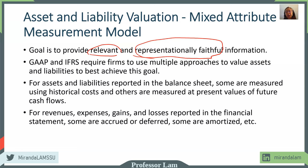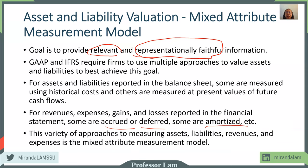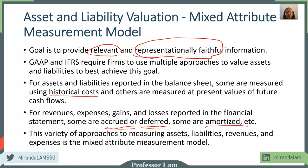So the approaches include cash basis, accrual or deferral — that's the matching principle — as well as amortization. To summarize: for assets and liabilities, we can use historic costs versus other measurements, and for revenues and expenses, we can use accrual, deferral, or amortization. Because one item on a statement may be valued using one method and another item using a different method, that's what leads us to call this mixed attribute measurement.